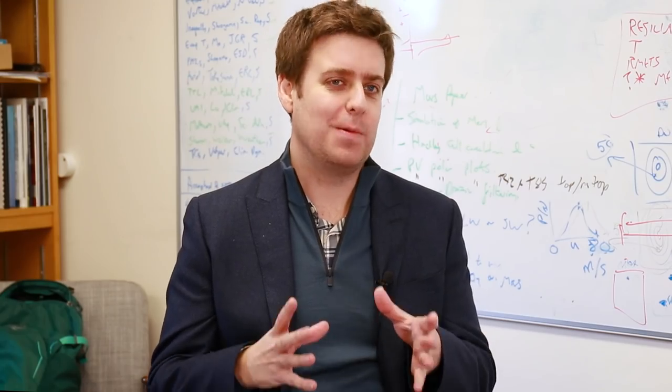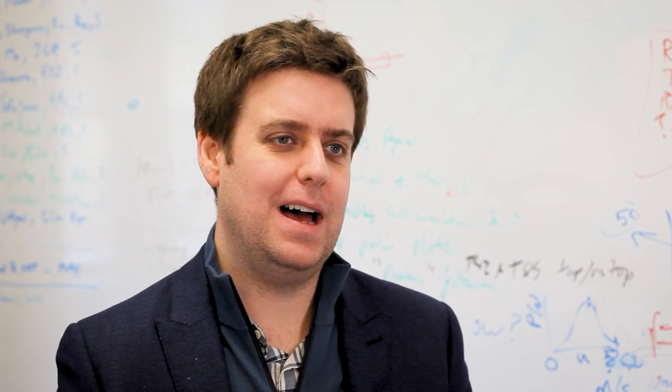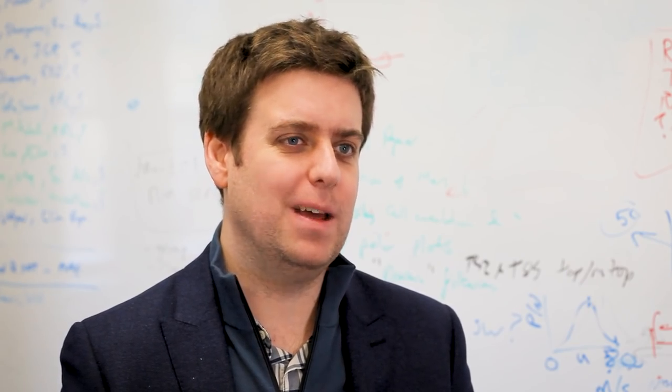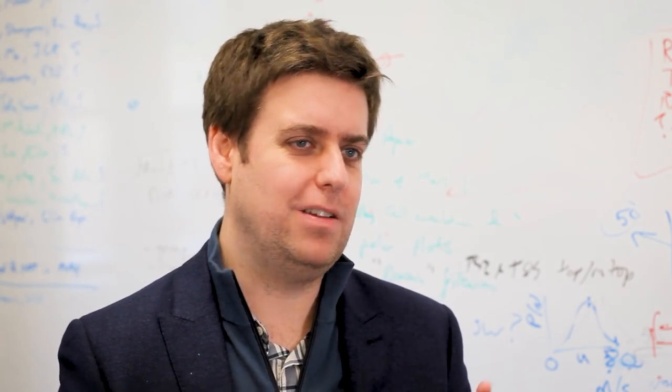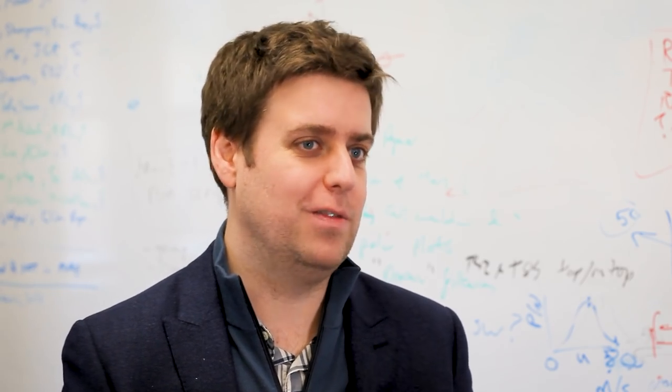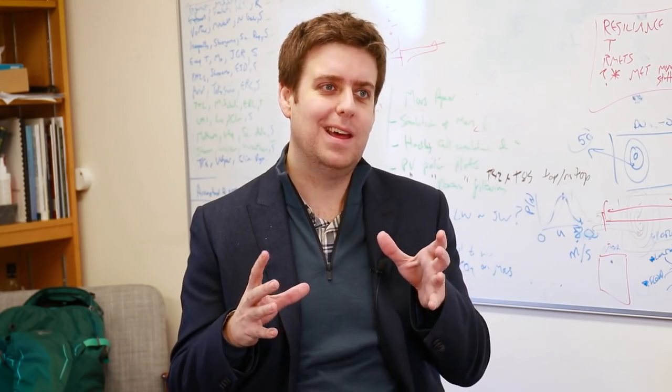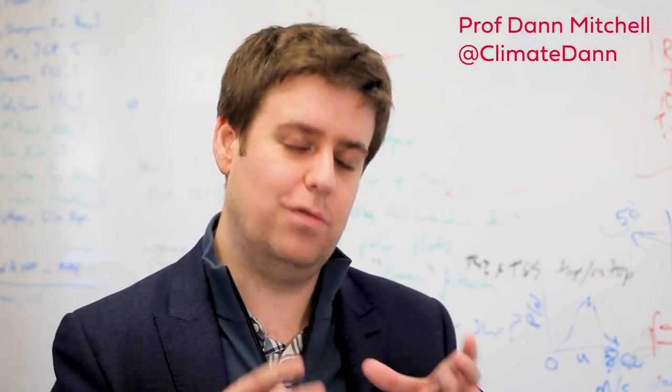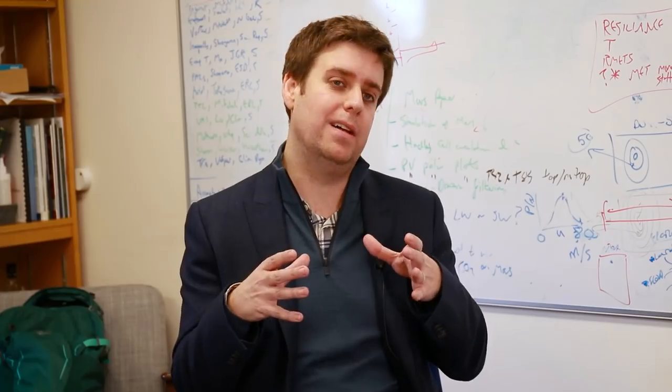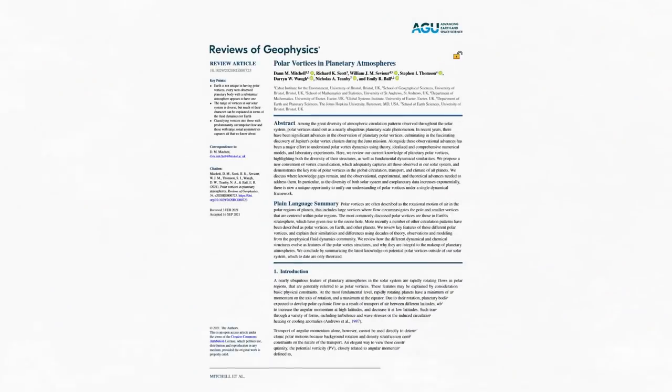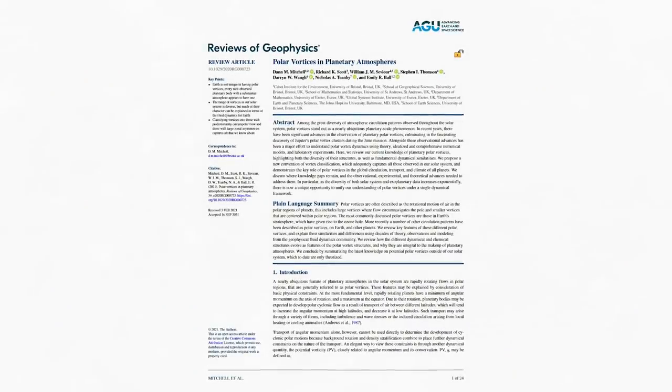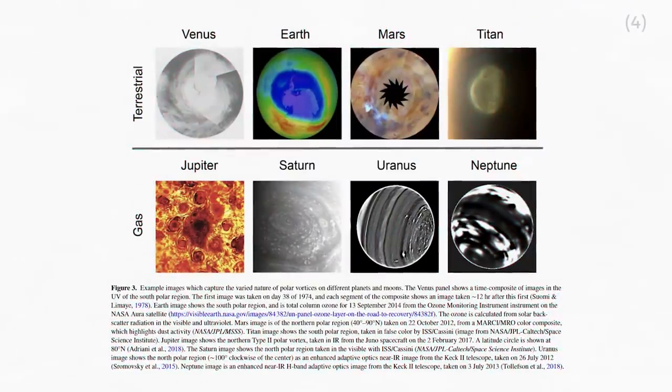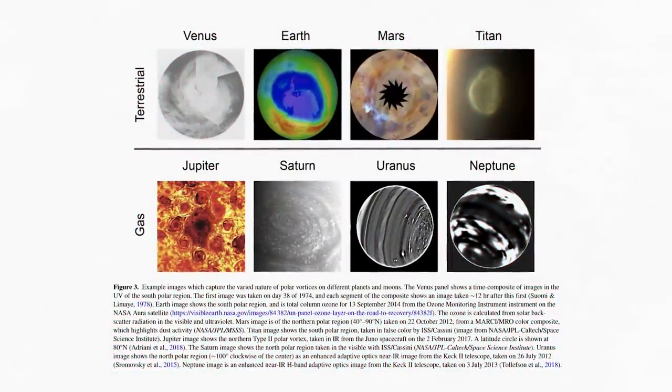We thought a lot about this when we wrote the paper. And we thought, how do you define polar vortex? And then we thought, well, let's split it up. How do you define polar? That's not even very obvious. How do you define vortex? Well, just a spinny thing. This is Professor Dan Mitchell at the University of Bristol, who, along with his co-authors, just published a paper reviewing all the polar vortices we know about and tried to make sense of what connects them all.